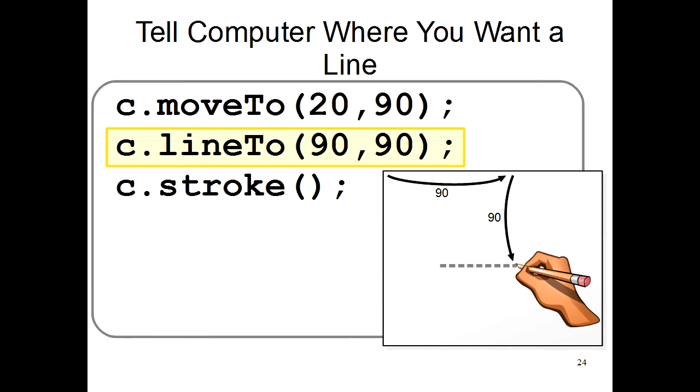Remember, to find 90,90, you start in the upper left, then go 90 to the right, and then 90 down.